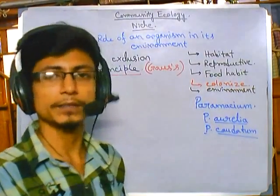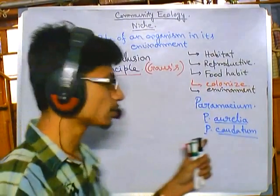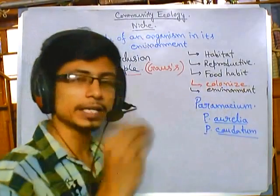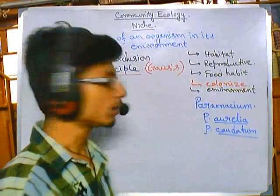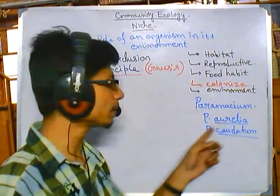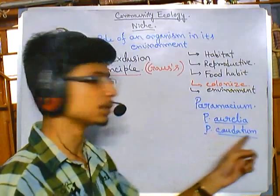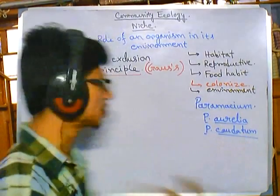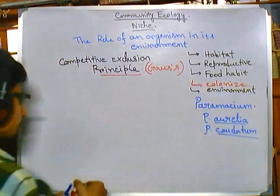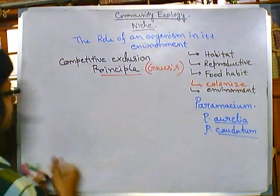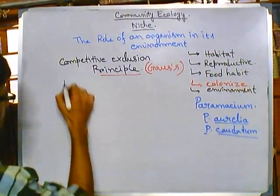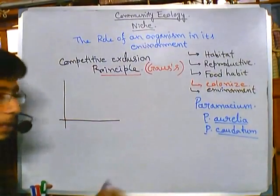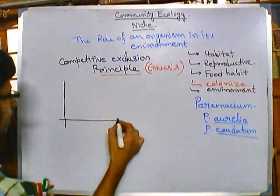To check whether they fit into the same environment or not, Gauss conducted experiments to observe the interaction between Paramecium aurelia and Paramecium caudatum when put into a similar environment.